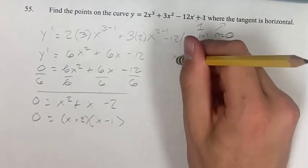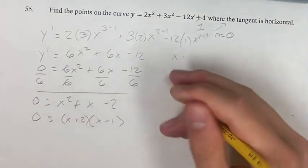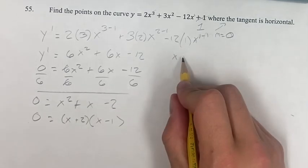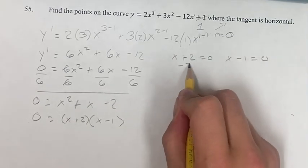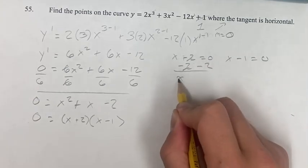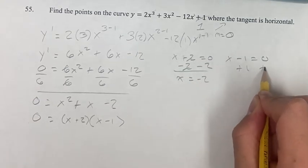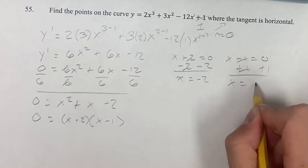I can take the extra step. For this to be 0, one of these has to be 0. So x plus 2 equals 0, or x minus 1 equals 0. And just solving for these, we get x equals negative 2 and x equals 1.